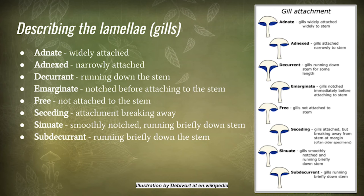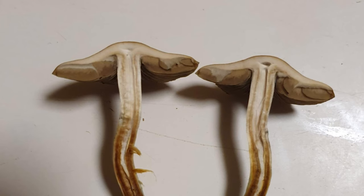These are illustrated on the right-hand side. This slide shows an example of an adnate to adnexed attachment. Sometimes this can be a little confusing because movement of the cap means that attachment can break. It's best to try to slice through the cap to see how that attaches across a number of gills. I've sliced this mushroom in half to illustrate how the gills are attached. In some cases, the gills may have slightly broken away from the stem — if so, just slice again until you can see what the attachment looks like.